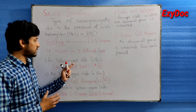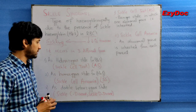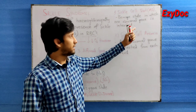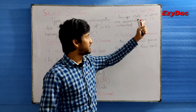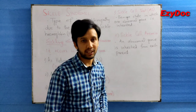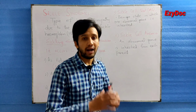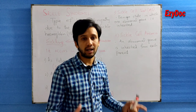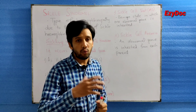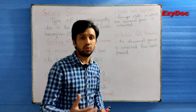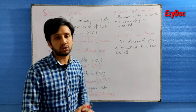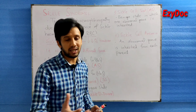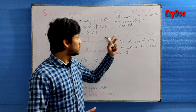The first form — the heterozygous state for HbS — is sickle cell trait. Sickle cell trait is a benign state in which one abnormal gene is inherited. In this condition there is no significant clinical problem, but when these cells are exposed to more hypoxic conditions, they can also present as a sickle cell crisis.